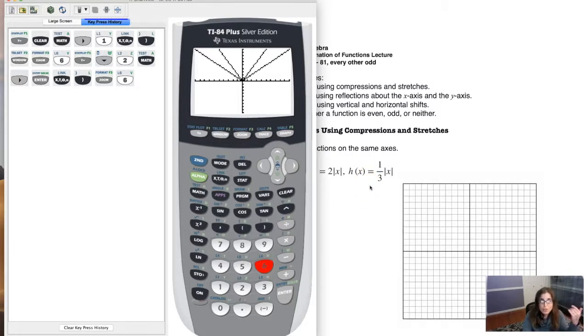And as we start to go through these problems, see if you can get ahead of the graph. Like where do you think the graph is going to go? Are we, and we're stretching, right? We're stretching and shrinking. Do we think that our basic absolute value function when we doubled it went like this? What do you think is going to happen to it when we only take a third of those absolute values?